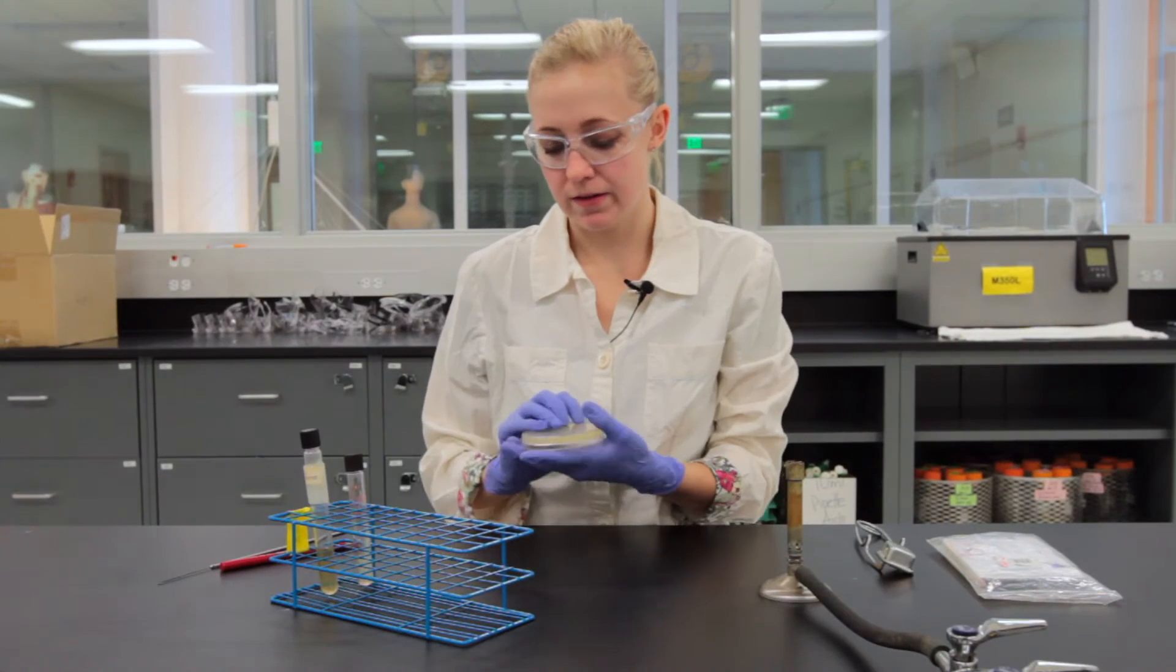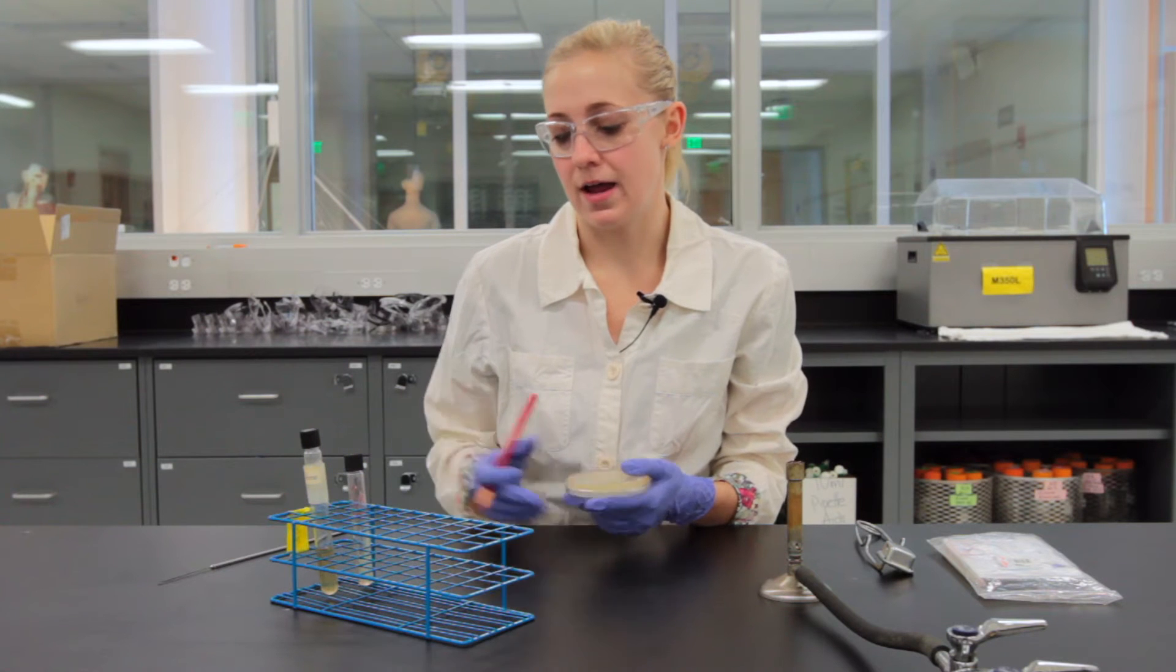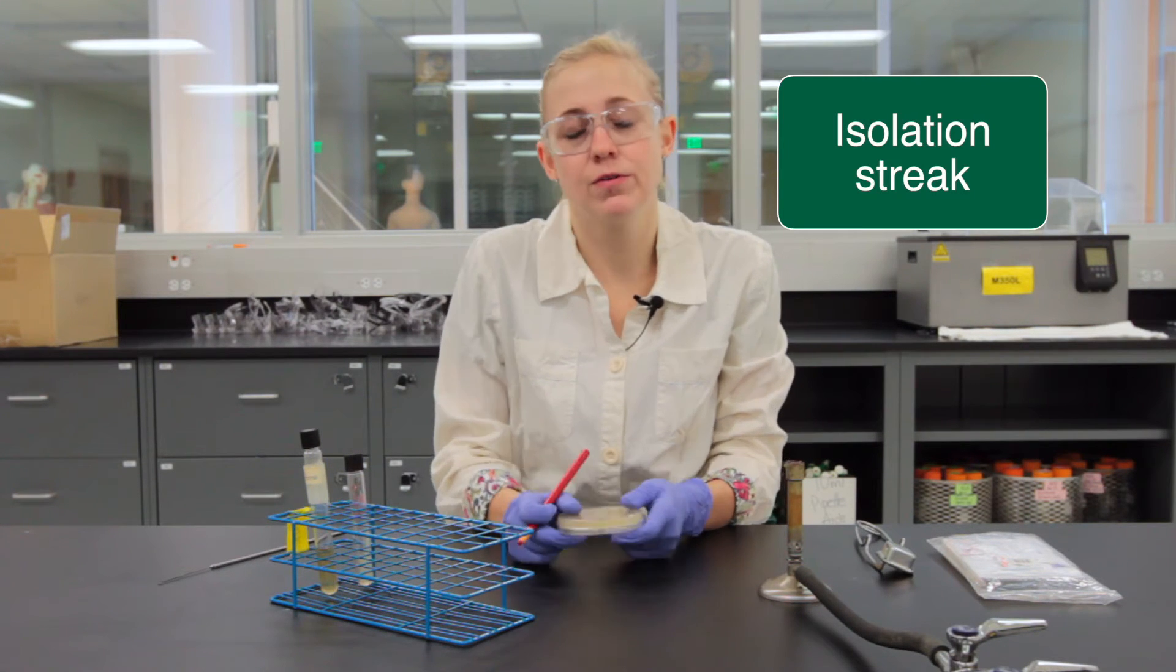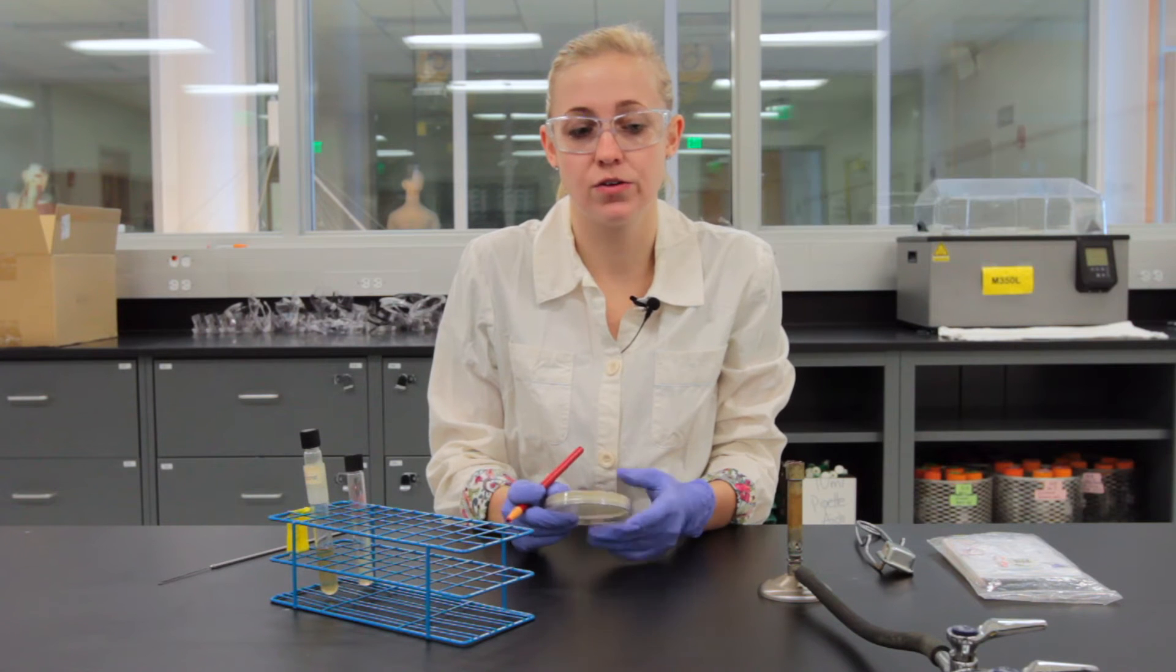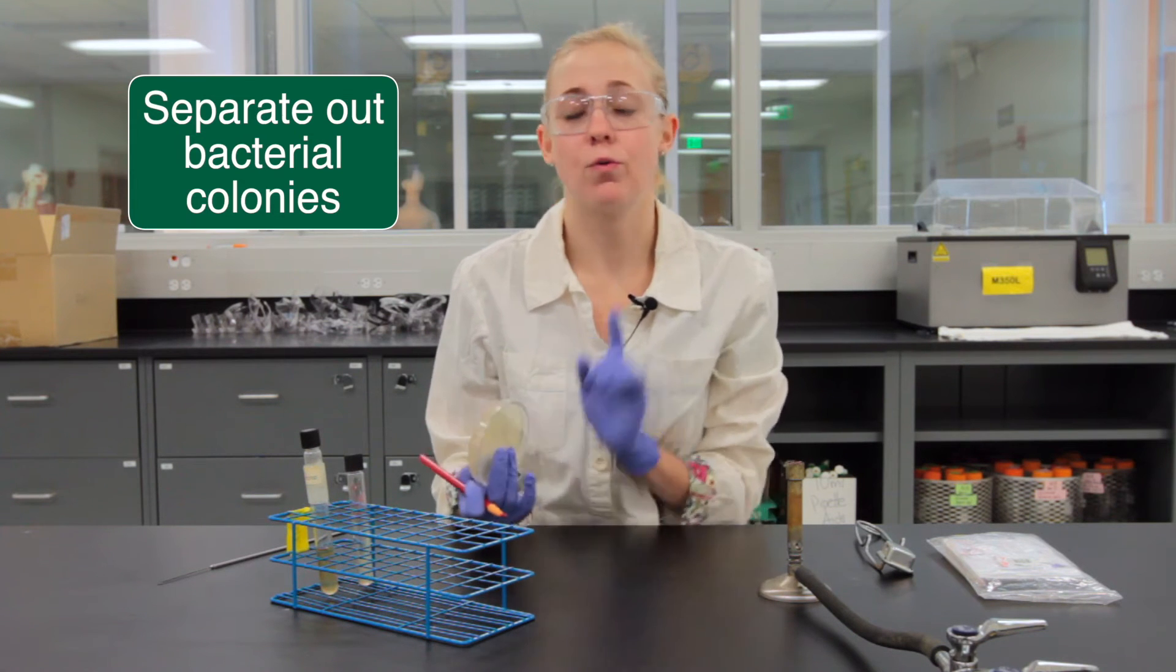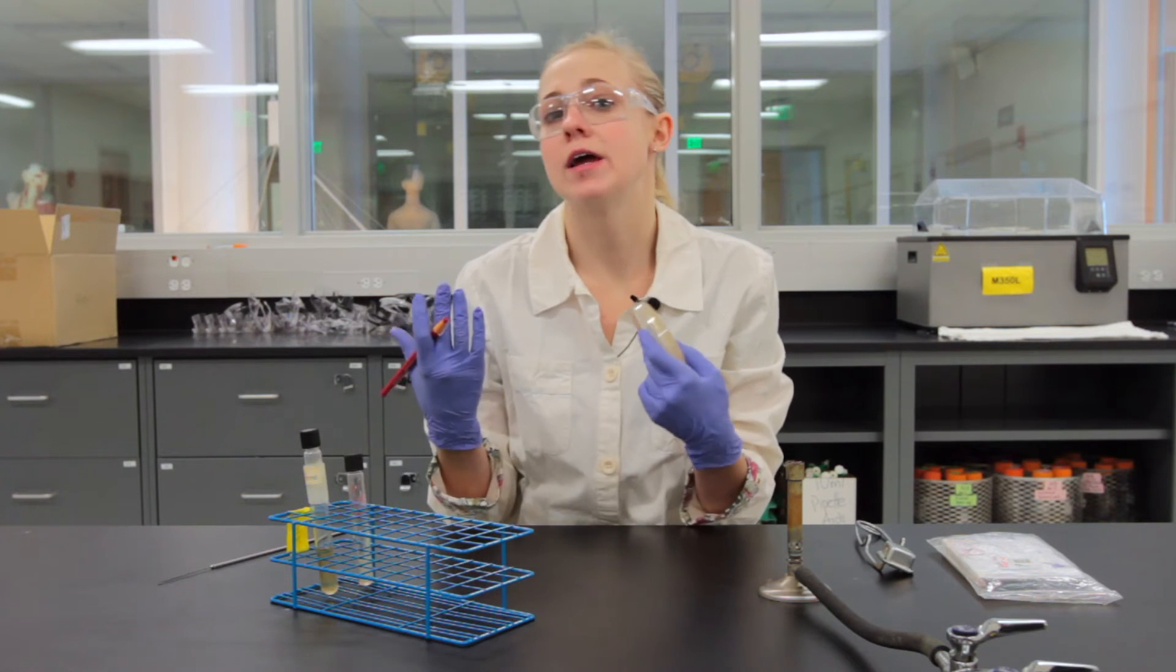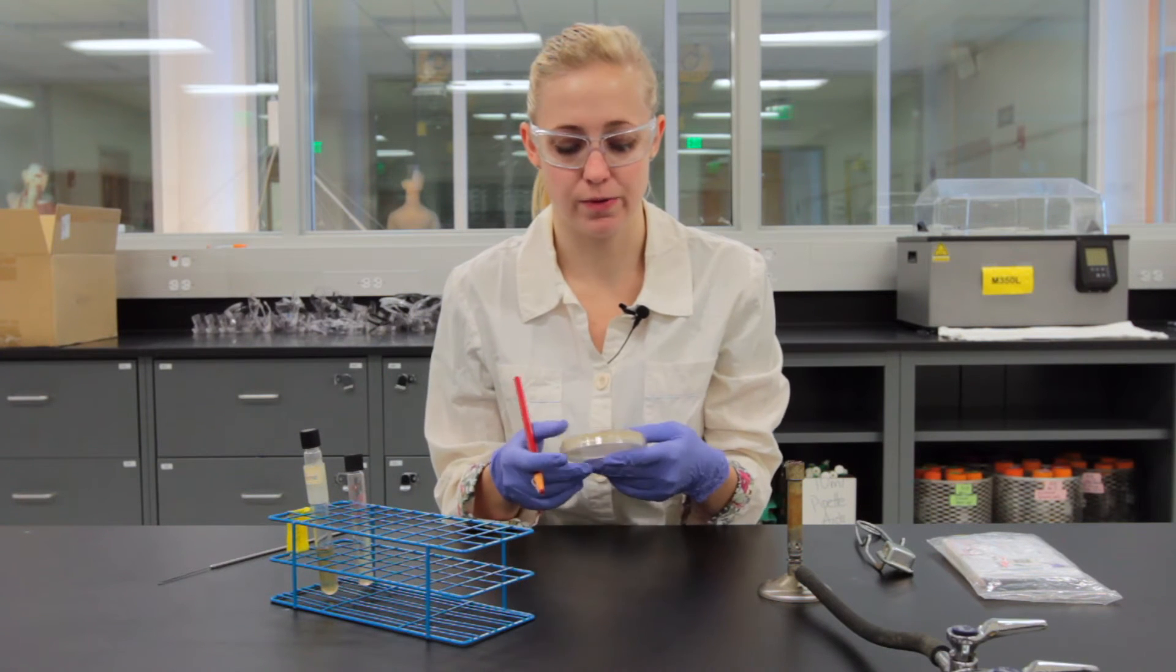Now the next thing that we're going to do is use aseptic transfer for the isolation streak and we use the isolation streak because we want to separate a whole bunch of bacteria out into one single isolated colony so that way we can take it for a gram stain or do other biochemical tests with it.